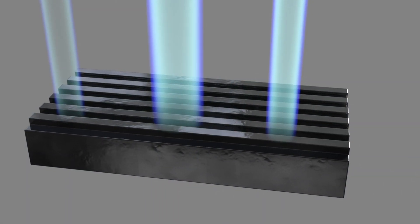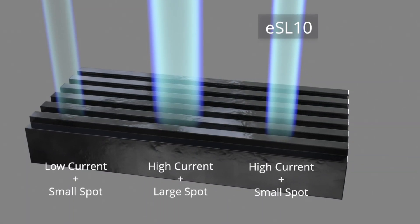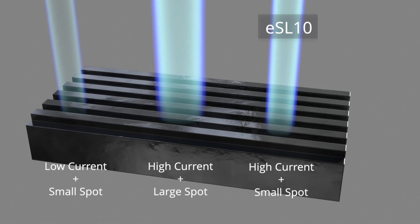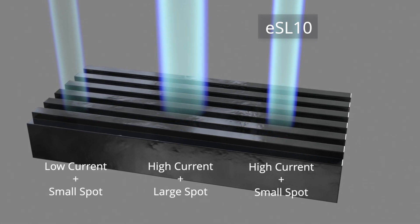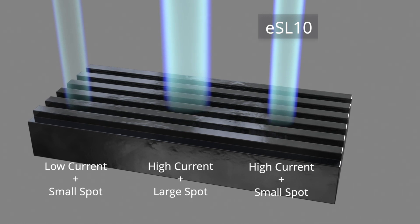The ESL-10 maximizes beam current in a small spot size through an innovative electron optics design, enabling simultaneous high sensitivity at high throughput.